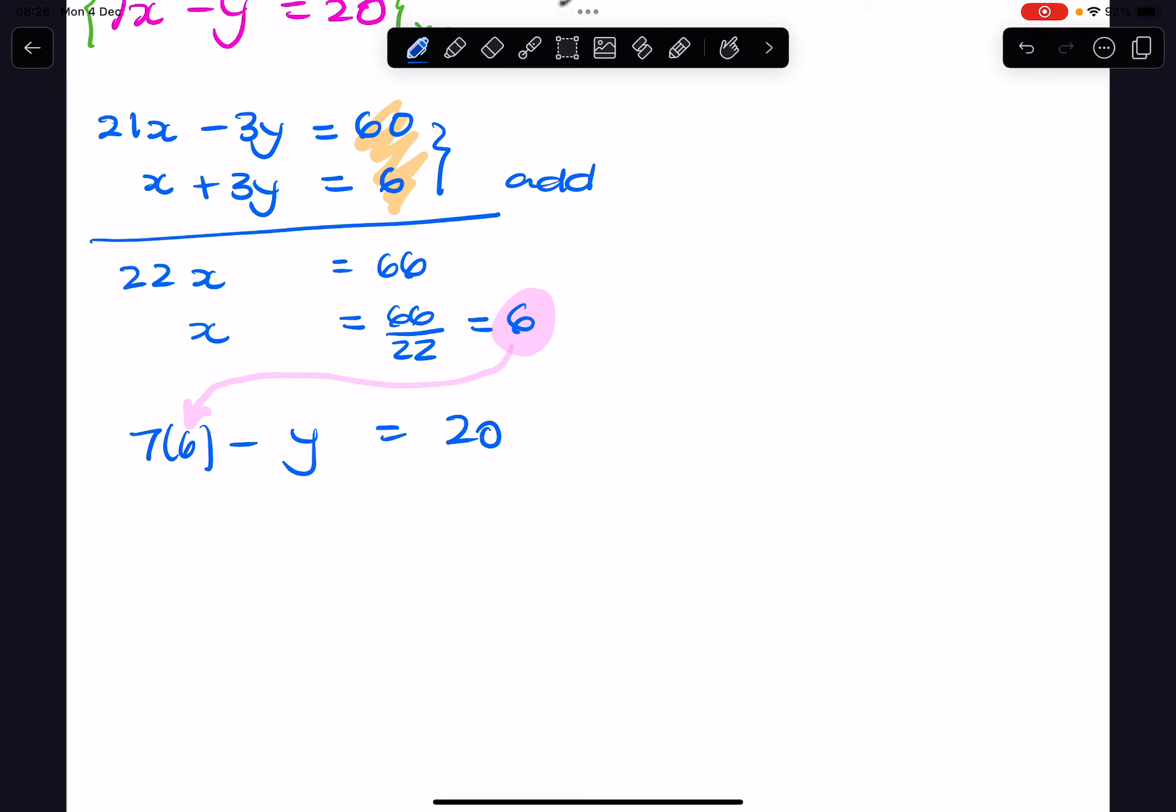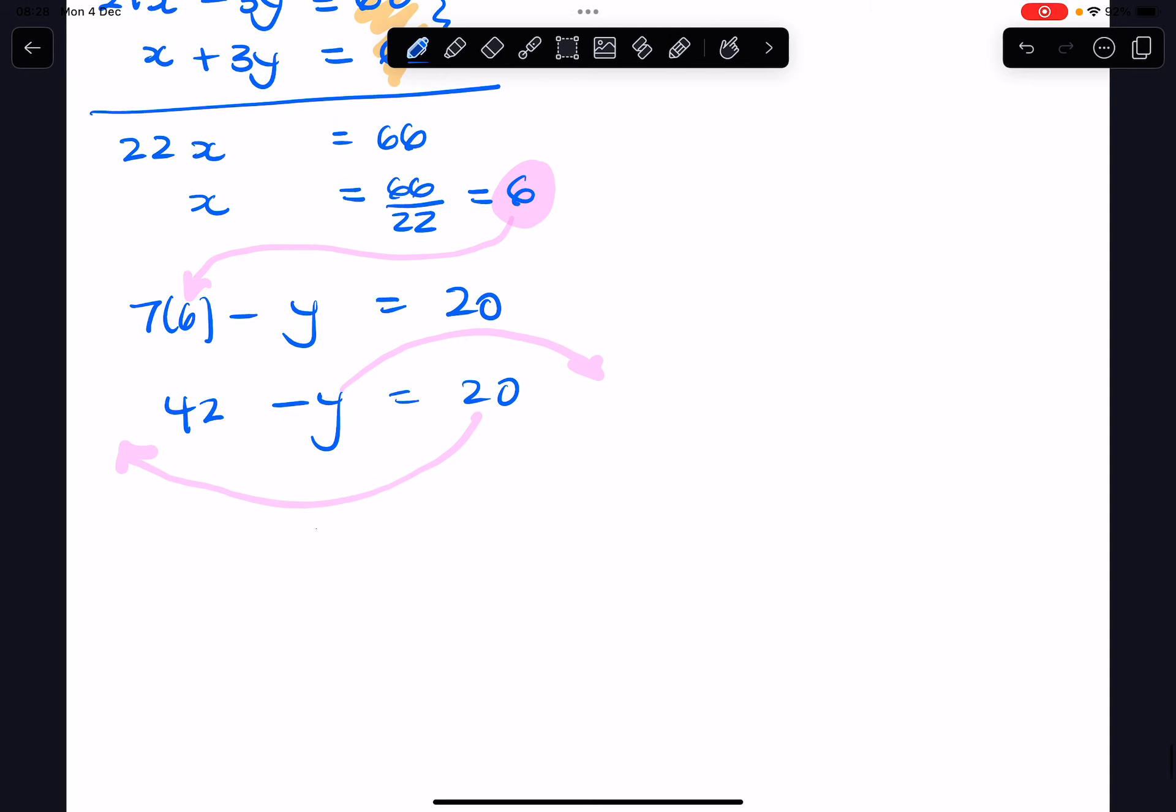So 42 minus y equals 20. You could rearrange that, so y equals 42 minus 20, y equals 22. So now we have our two solutions of x and y.